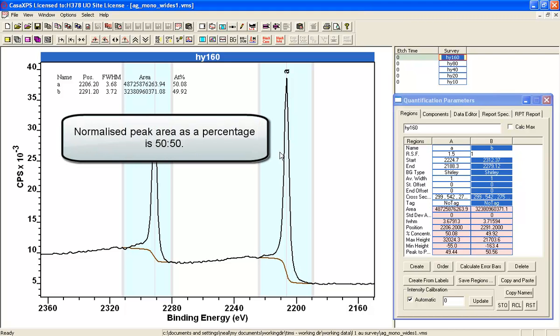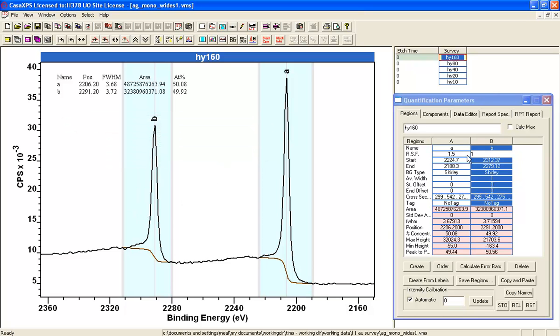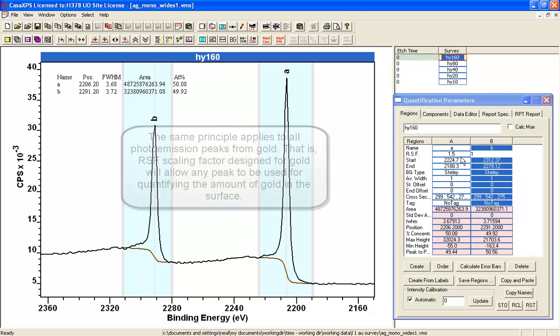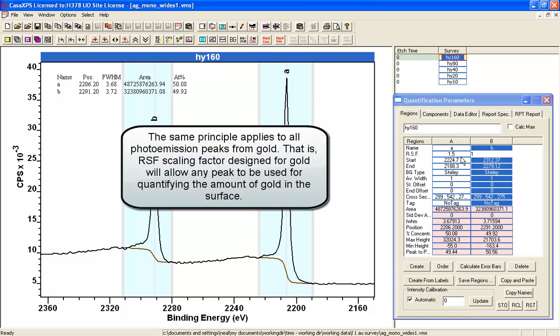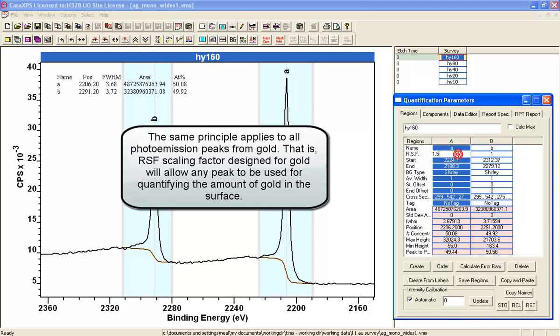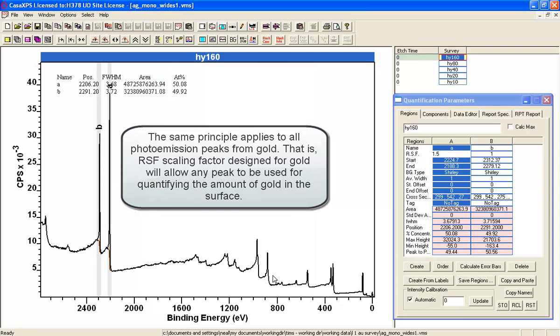That's 50-50 in terms of the scaled area. And if I can do this for all of the peaks in an XPS spectrum, then I will have a table of scaling factors that will be the relative sensitivity factors for measuring gold, regardless of which peak I choose.